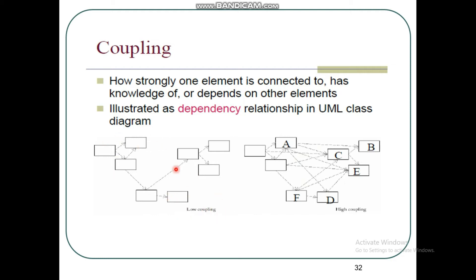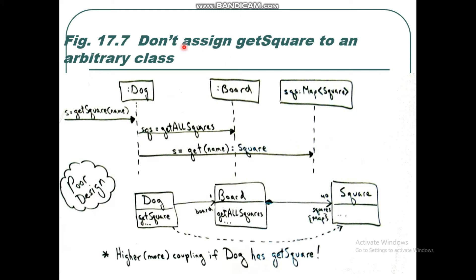You want to ensure that a class is only strongly connected to another class when it truly needs knowledge of and depends on that other class. Only then should you create coupling between them. You don't want unnecessary coupling or dependency. For example, don't assign getSquare to an arbitrary class. Now let's look at figure 17.7 to properly understand this pattern.